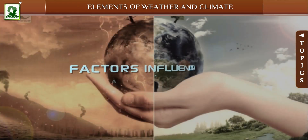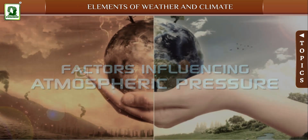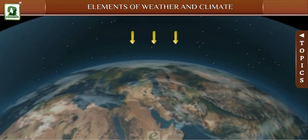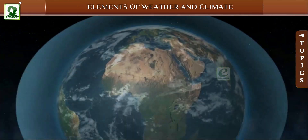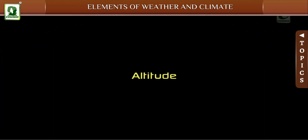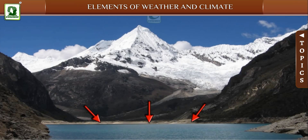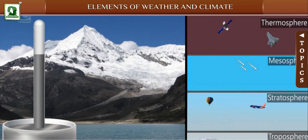Atmospheric pressure varies from place to place and from season to season. The factors which influence atmospheric pressure include altitude. Air pressure is highest at sea level and it decreases with altitude. The upper layers of the atmosphere are less dense, so they exert lesser pressure.